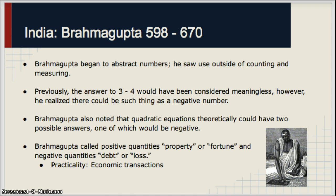Okay, so let's transition to talk about Brahmagupta for a bit. India, another society that very readily accepted the notion of negative numbers, in large part due to Brahmagupta. He saw use of numbers outside of counting and measuring; he saw more abstract use. Previously, 3 minus 4 would have been considered a meaningless thing. They would have either said it's not solvable, or it would be zero because it would be the closest they could get. Until Brahmagupta, this expression would have been not very solvable. Brahmagupta also had a huge influence on algebra. He noted that quadratic equations theoretically could have more than one possible answer. For example, the square root of 9 could have been either 3 or negative 3, and so he realized that it could have two possible answers, one of which could be negative.